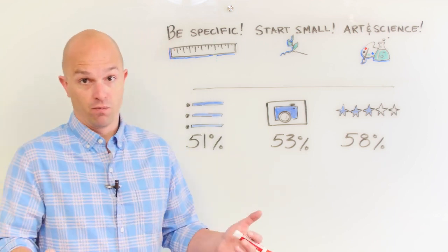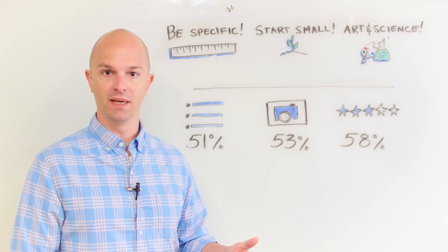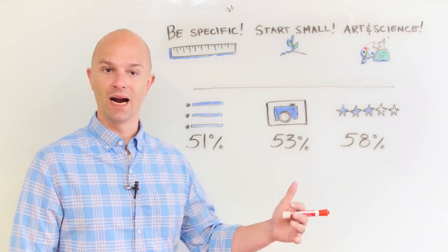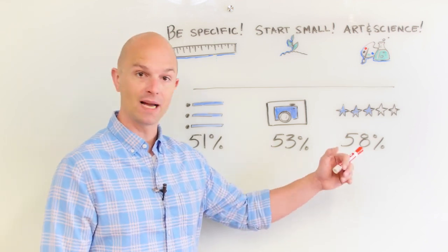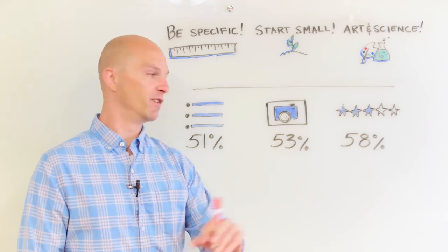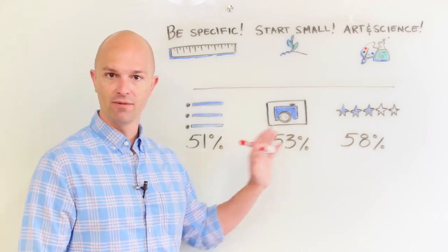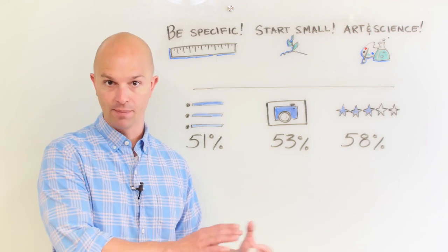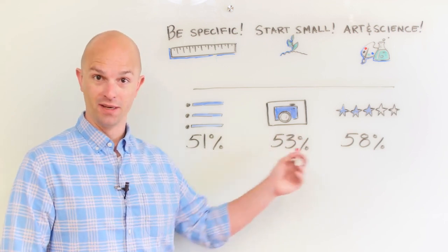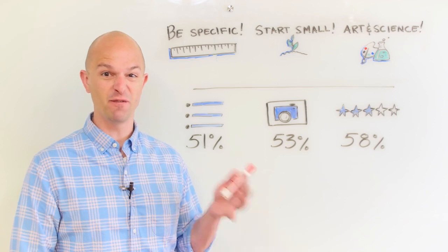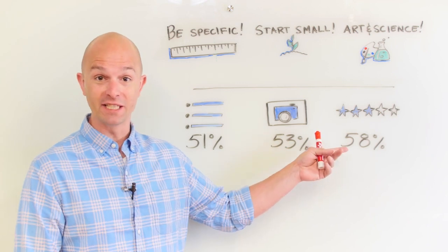For example, we can say with a fairly high level of confidence that 51% of the time, having more feature bullets causes your products to convert at a higher rate. 53% of the time, having more images causes your products to convert at a higher rate. And 58% of the time, having more reviews — notice I didn't say higher reviews, but more reviews — causes your products to convert at a higher rate. These numbers may not look huge, but if you're counting cards at the blackjack table you have a 51%-ish advantage and they'll throw you out of the casino. So a 58% advantage is absolutely huge.